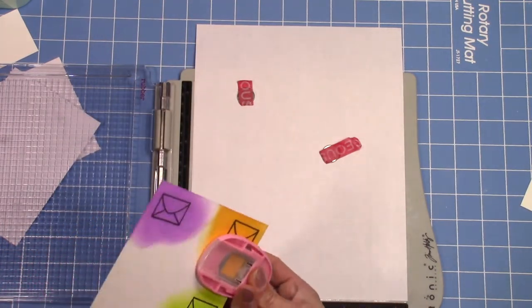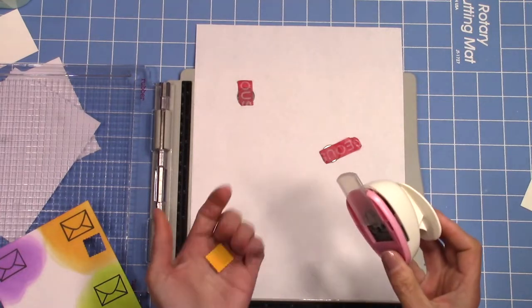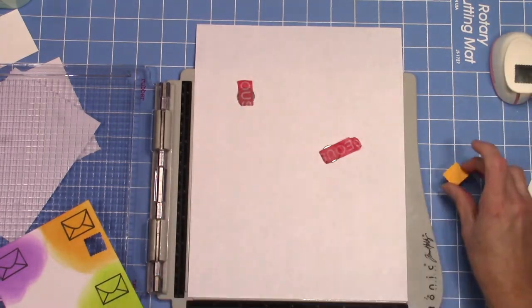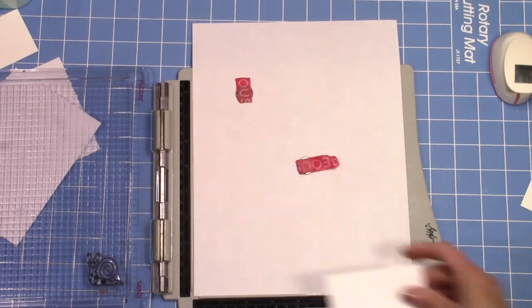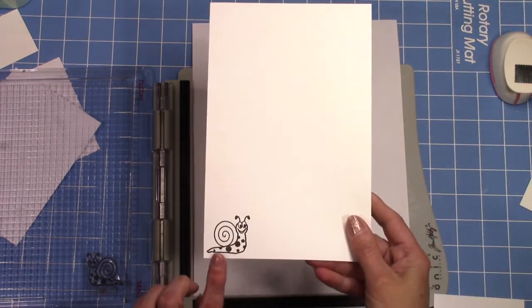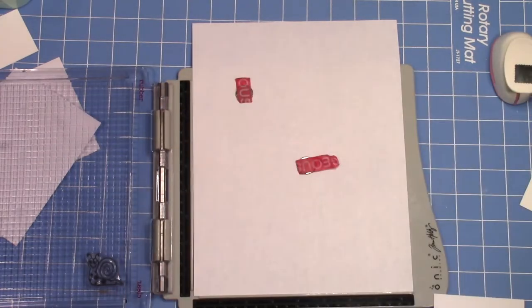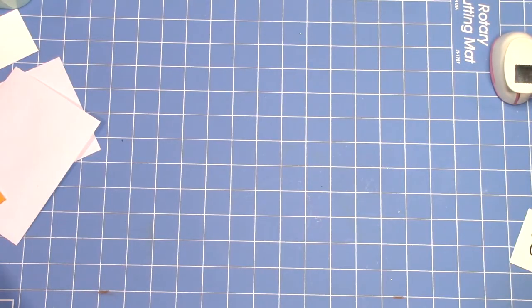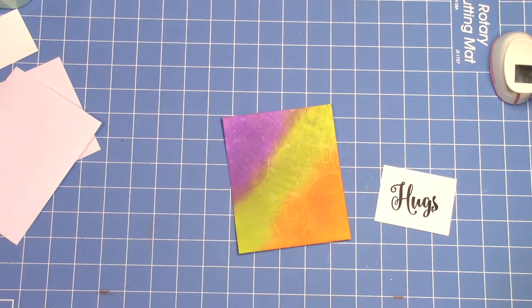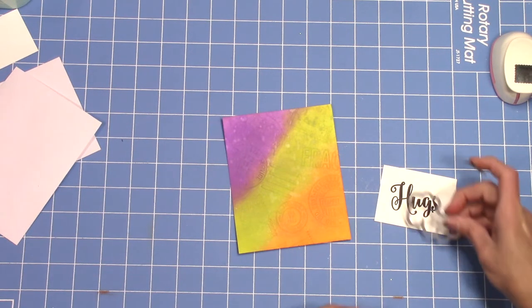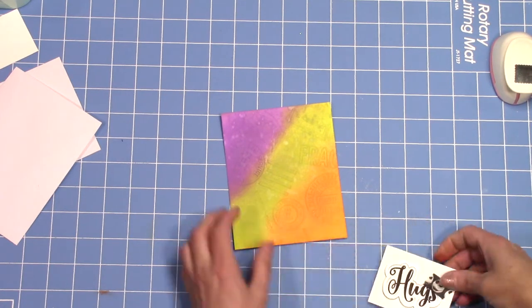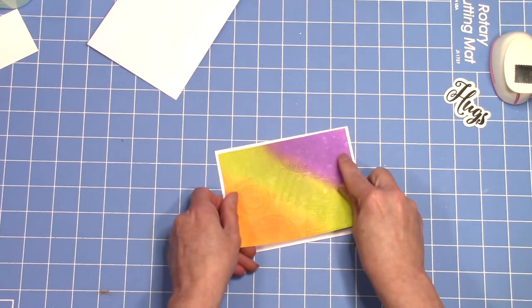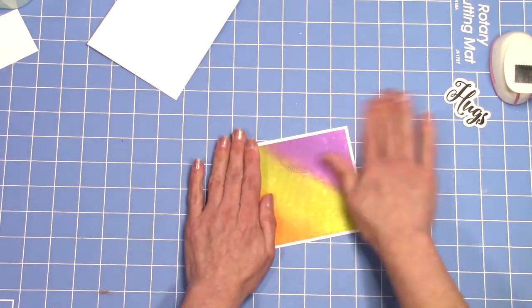This is just a little punch I had in my stash and it kind of looks like a stamp shape, so I'm going to punch that out and use it. You could easily just cut out a little square and use it as a stamp. We're also going to stamp out the little snail that comes with the It's in the Mail stamp set and I also stamped that on the envelope and on the stationery piece.